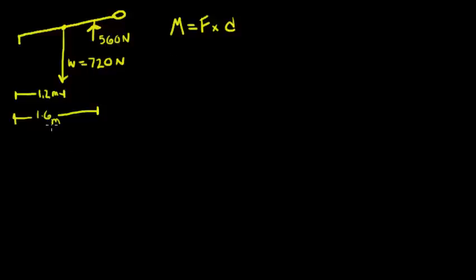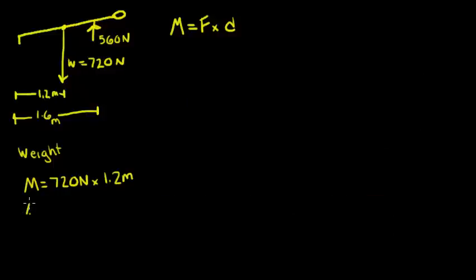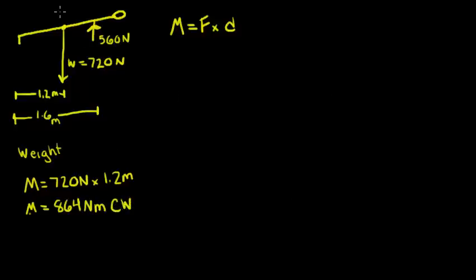Let's do that now. First, we will do his weight. We know that that's 720 newton force times 1.2 meters. This gives us a moment arm of 864 newton meters in the clockwise direction, because the force is causing him to rotate like this.